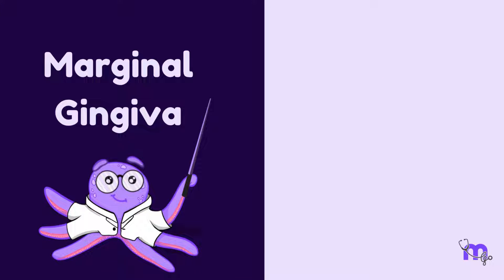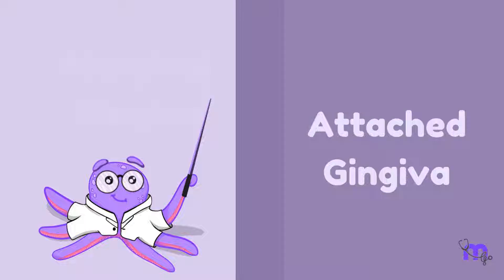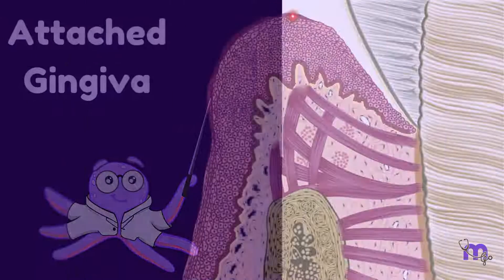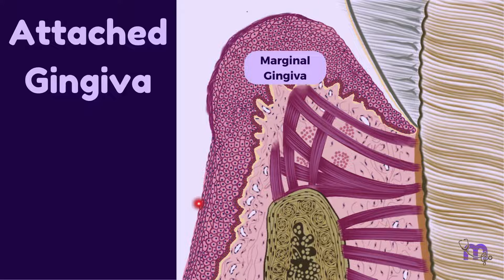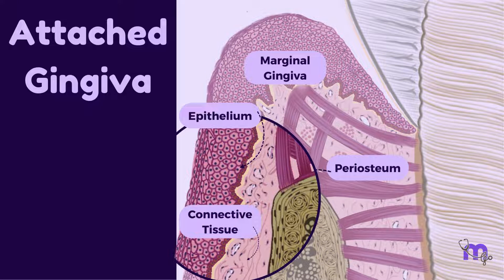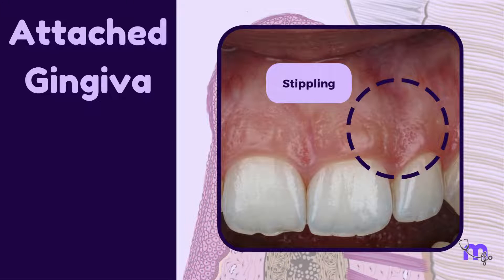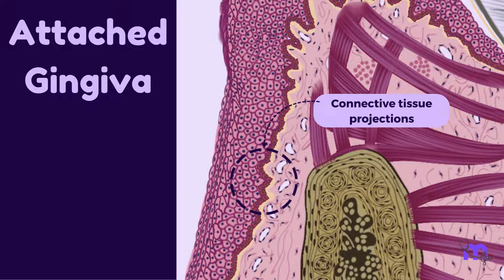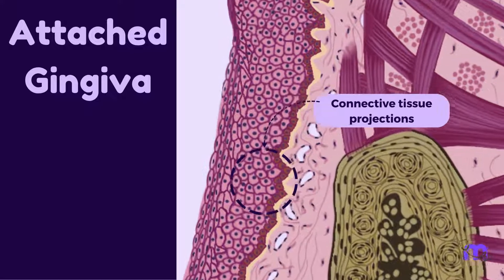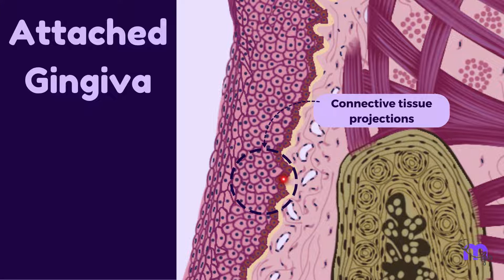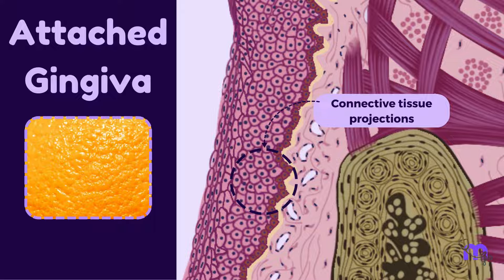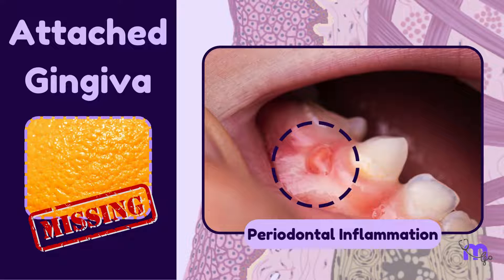Now that we have learned about marginal GENGIVA, let us move on to the attached GENGIVA. It is a continuation of the marginal GENGIVA, is keratinized, and is attached to the underlying periosteum by epithelium and connective tissue. Stippling is a distinguishing characteristic of attached GENGIVA that occurs from the connective tissue projections within the GENGIVA tissue, which create microscopic depressions and elevations, giving an orange peel appearance. This orange peel appearance is lost in periodontal inflammation.